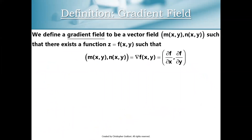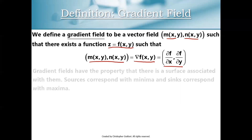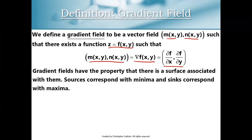Here's our definition of a gradient field. A gradient field is a vector field m of xy comma n of xy such that there exists a function z equals f of xy with this property: m of xy comma n of xy is the gradient for that surface — meaning m comma n equals df/dx comma df/dy for some surface f of xy. In this scenario, sources correspond with minima and sinks correspond with maxima. When we can classify our vector field as a gradient field, we have all of these correspondences between our surface and our vector field.